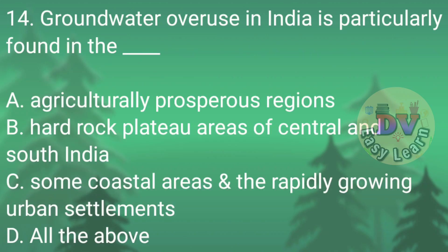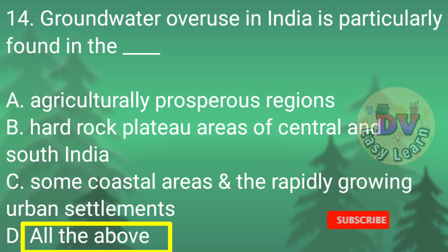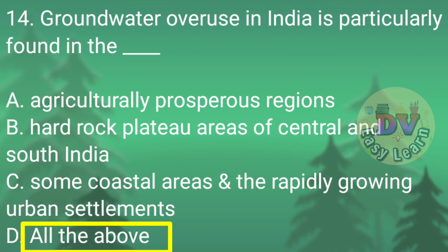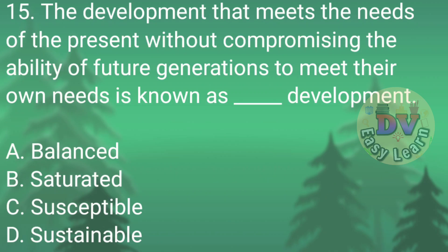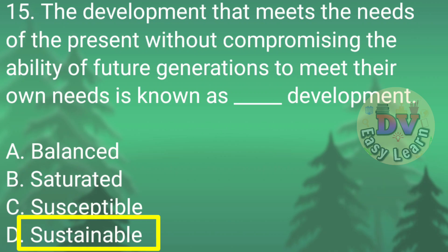Q14: Ground water overuse in India is particularly found in the dash. Correct answer: All the above — Agriculturally prosperous regions; Hard rock plateau areas of central and south India; Some coastal areas and the rapidly growing urban settlements. Q15: The development that meets the needs of the present without compromising the ability of future generations to meet their own needs is known as dash development. Correct answer: Sustainable development.